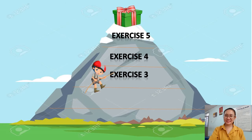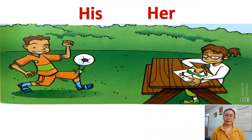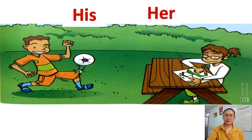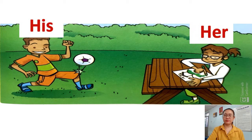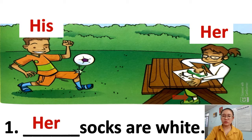Now let's do Exercise 3 together. Exercise 3 on page 67 is about 'his' or 'her'. We use 'his' for a boy and 'her' for a girl. Look at question number one: the socks are white. Where are the white socks? Yes, they belong to the girl, so we use 'her' — her socks are white.